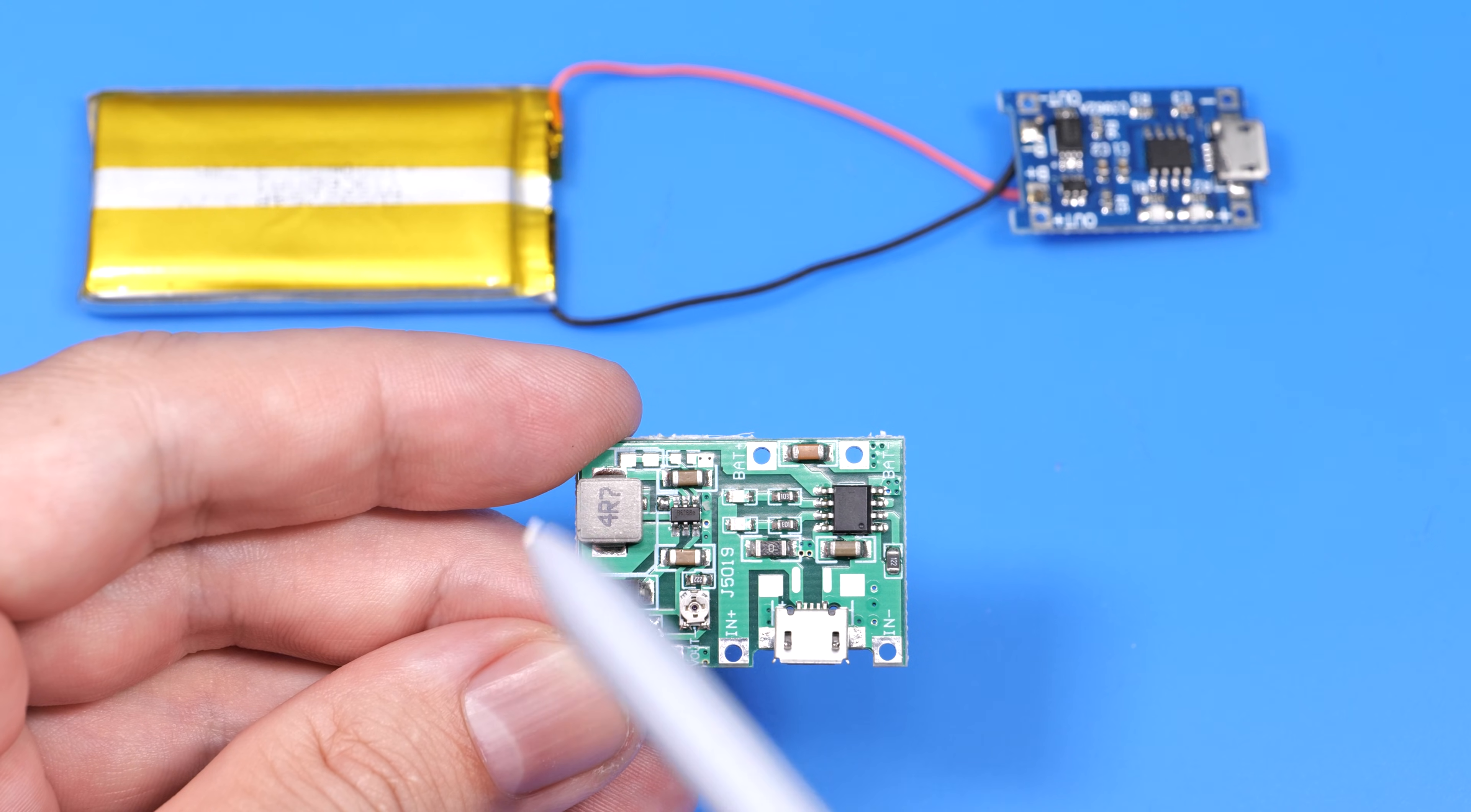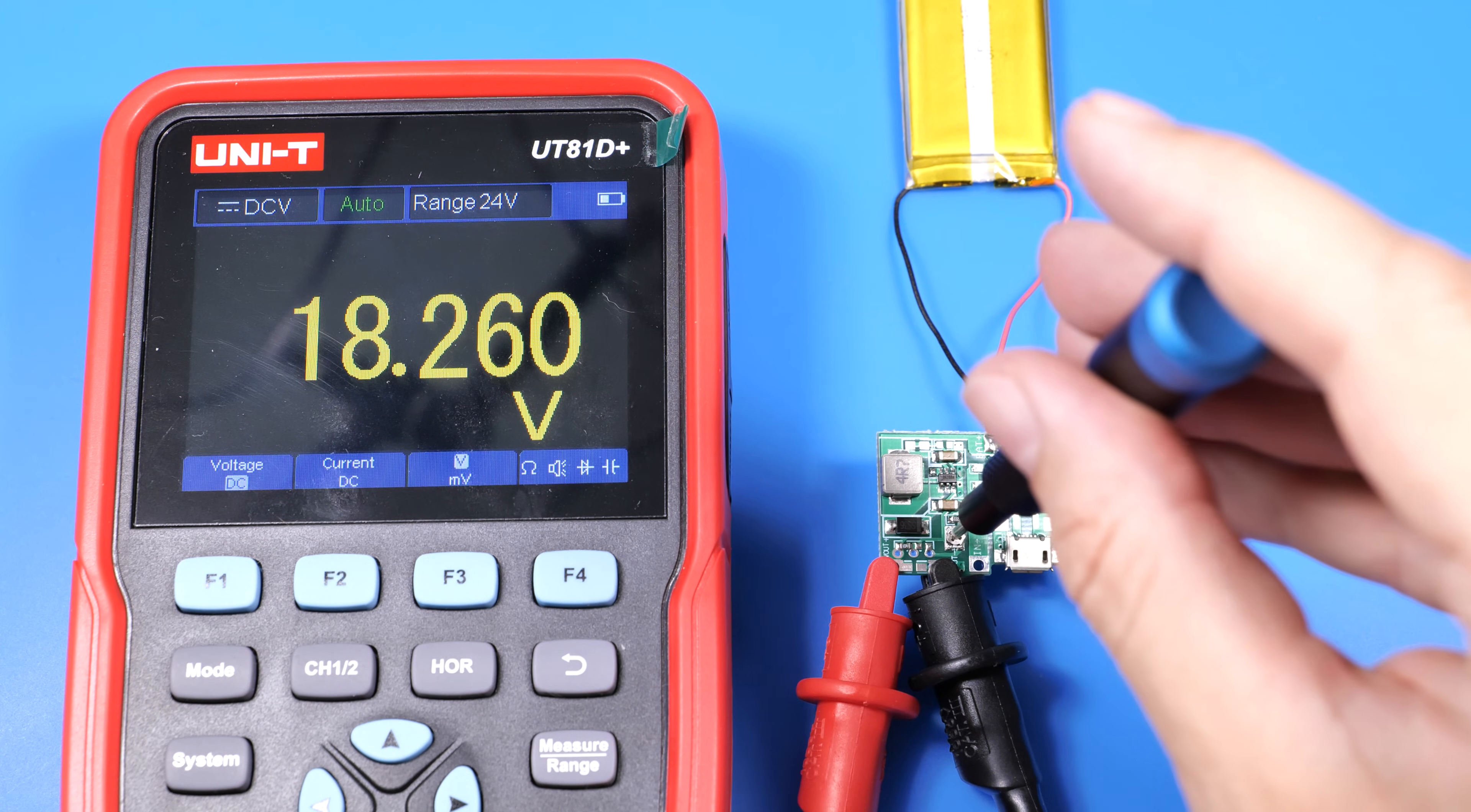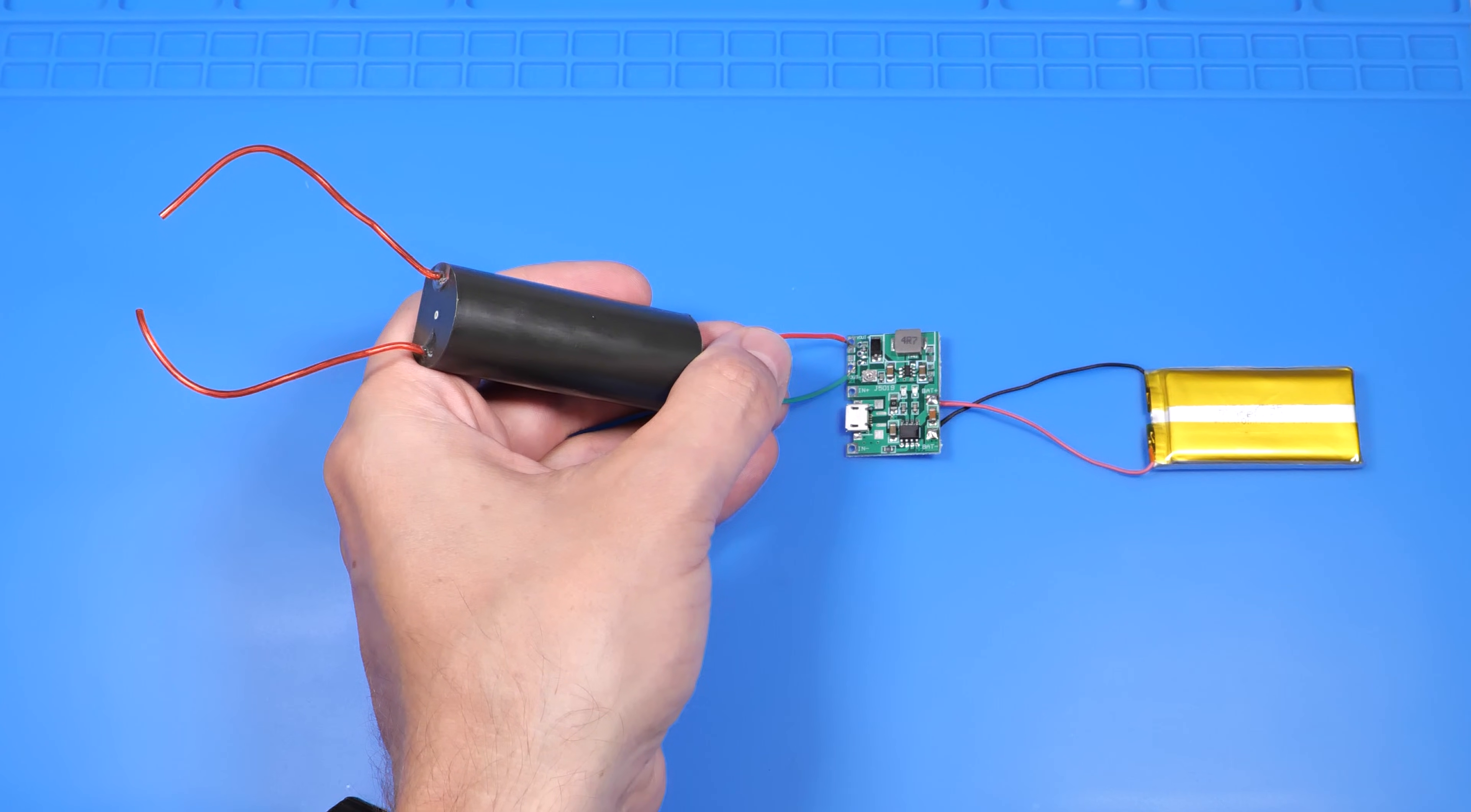There are also versions that come with a DC boost converter, which can boost the voltage up to 20V. This is super convenient if you're using a 3.7V lithium battery but need a higher voltage for your device. Just adjust the output to around 6V and it's ready to go.